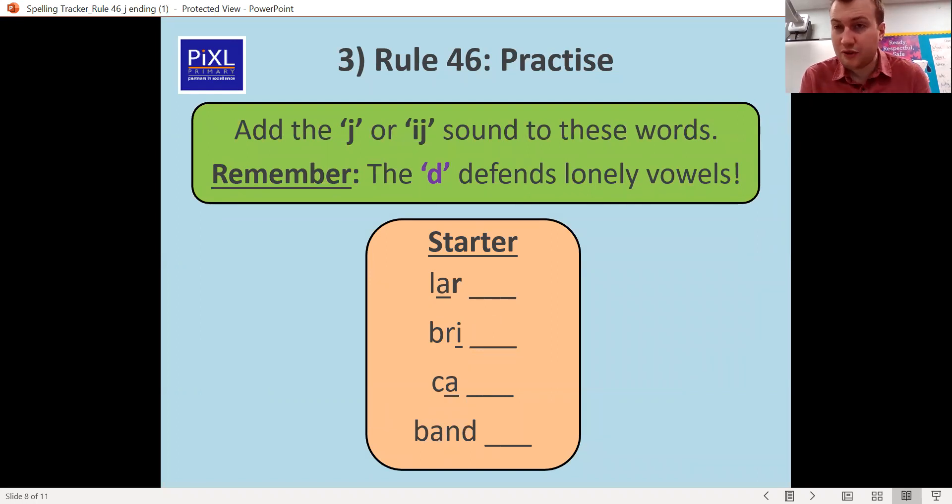Right, here are your first four words to try. Large, bridge, cage and bandage. So for large we should have just added the G and the E because it's an R next to it which is a consonant. For bridge we should have put the D because the I is a vowel and it's on its own. For cage because we're saying the A sound it becomes a split A so it's C-A-G-E, and then for bandage it's two syllables but edge at the end is A-G-E. So well done if you got those.